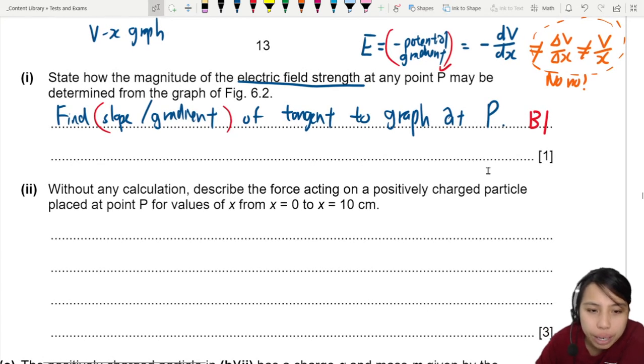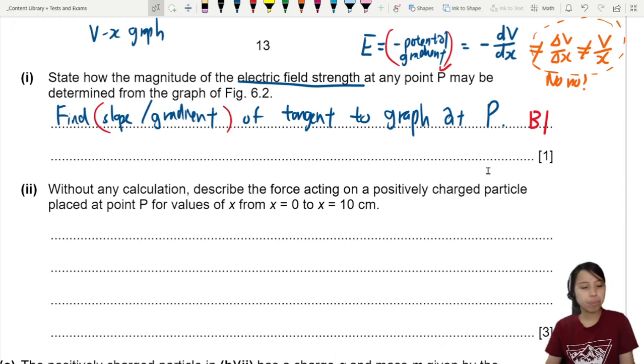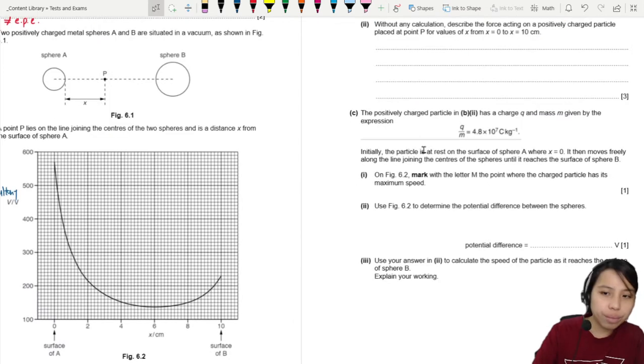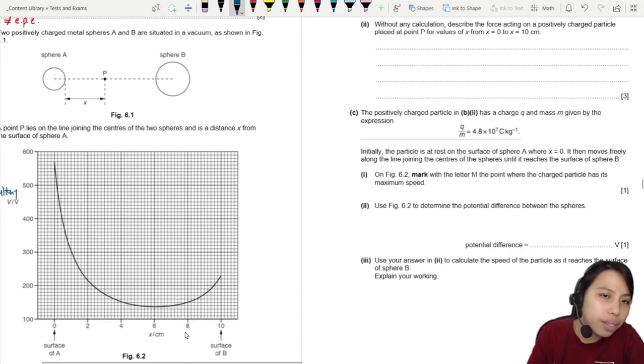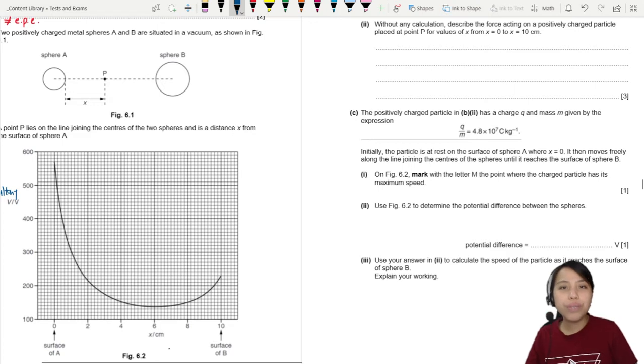Without any calculation, we need to describe the force acting on a positively charged particle placed at point P for values of x from 0 to 10. I think, gotta look at the graph. So when we look at the force, we need to think of how this force and potential graph relate. This is V against x. Now, just now we already said that a gradient is electric field strength, right?